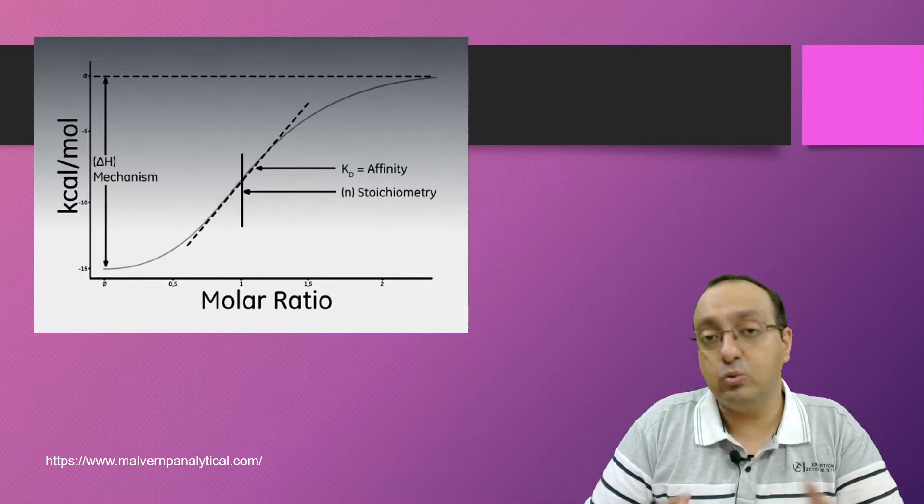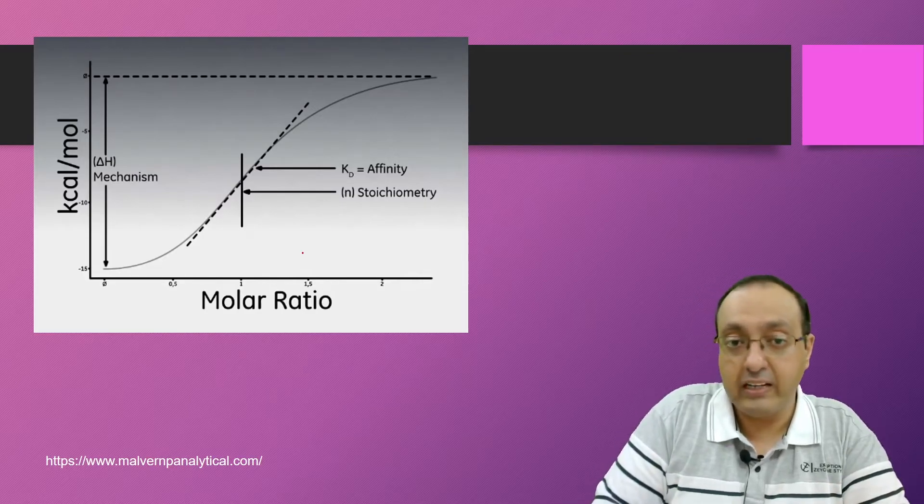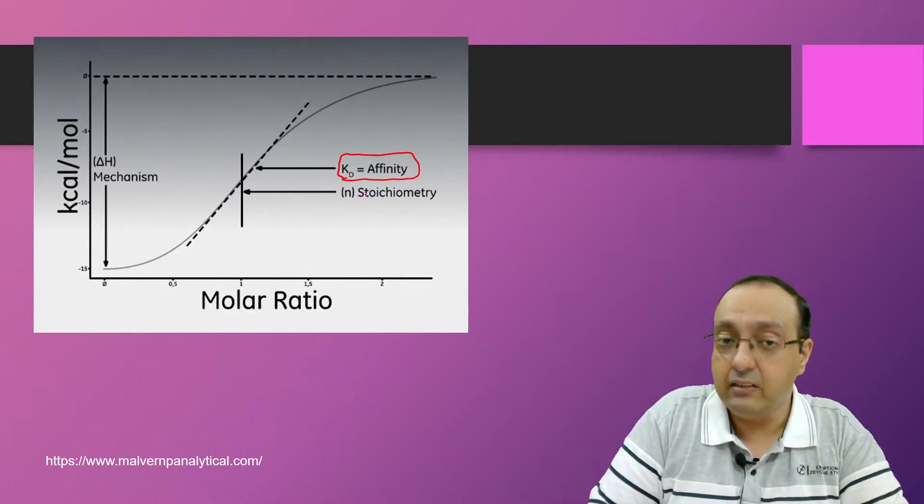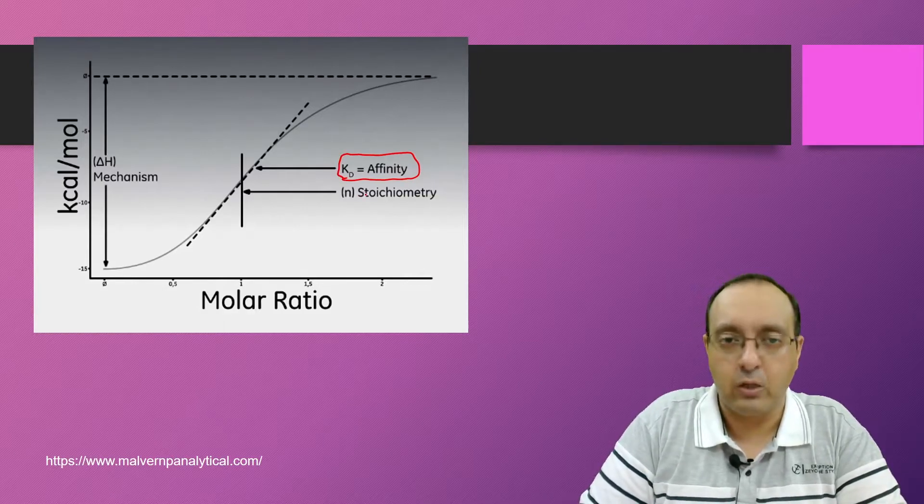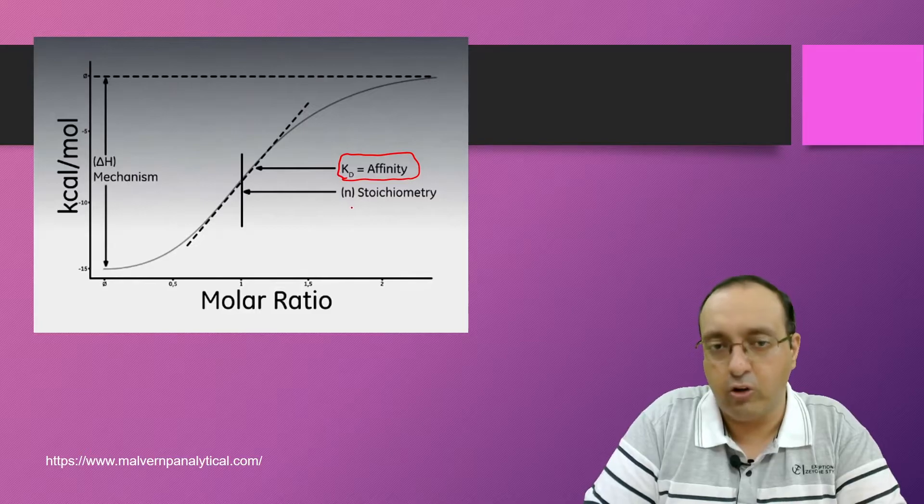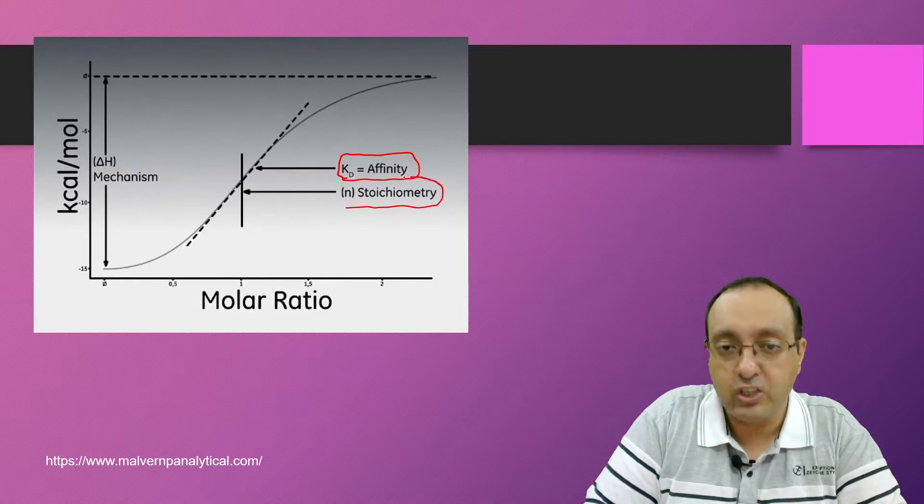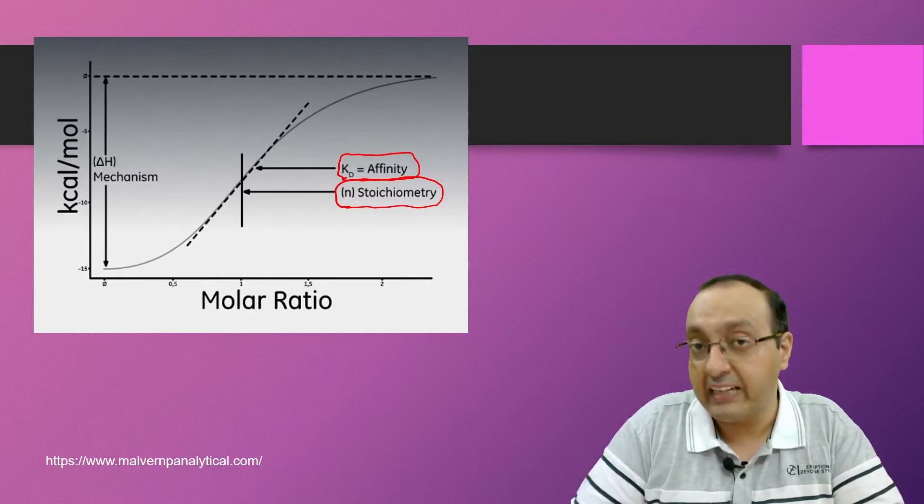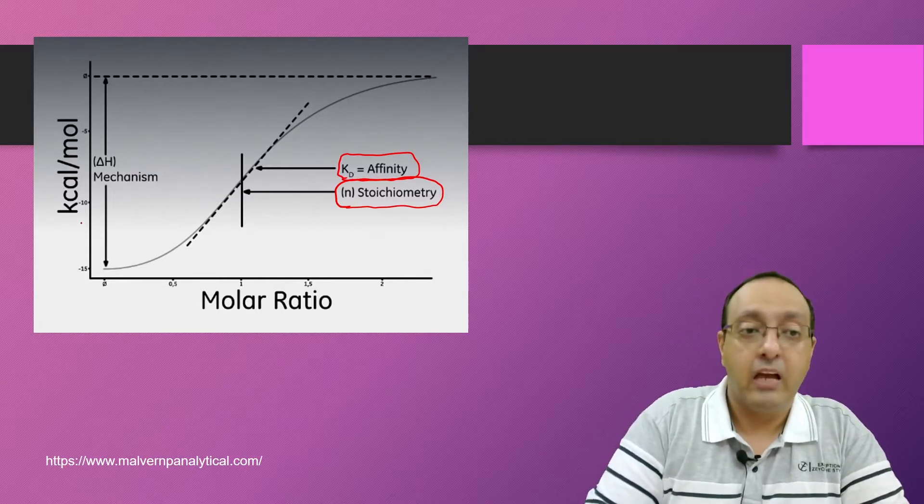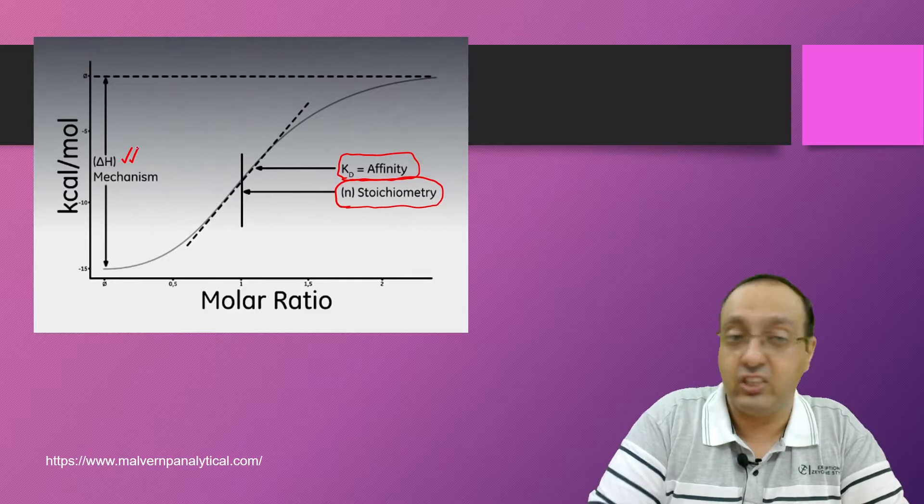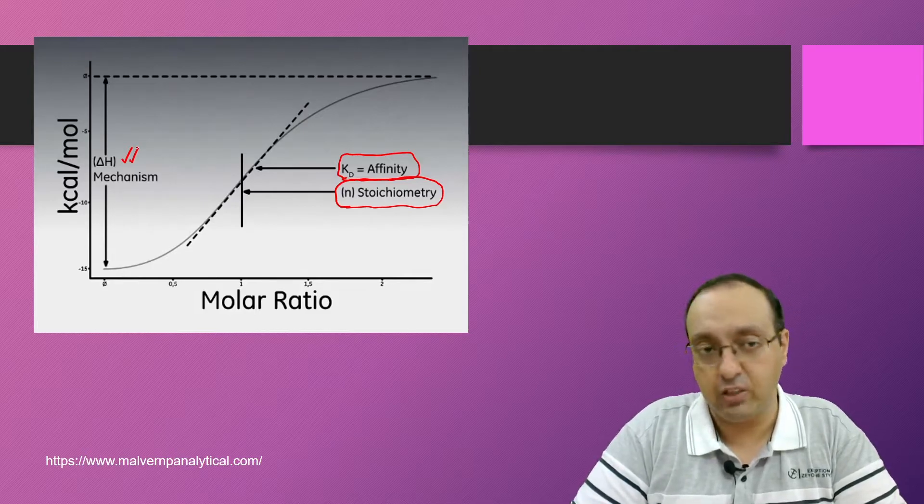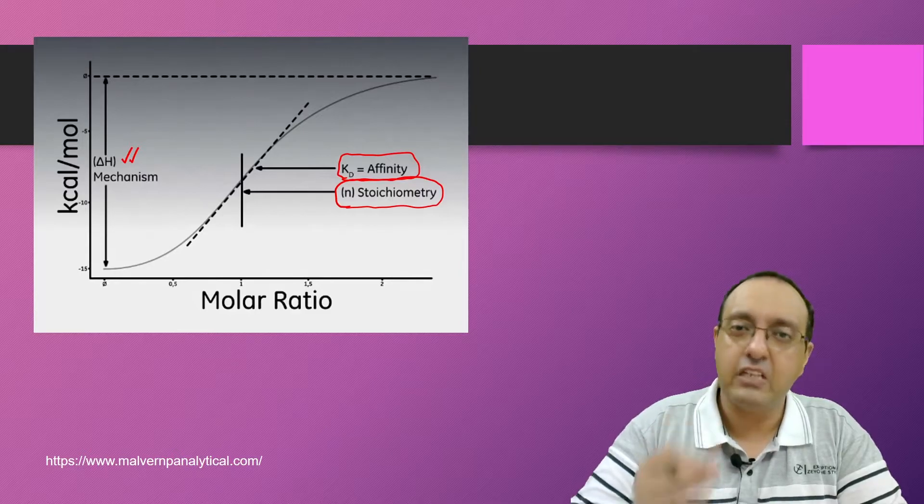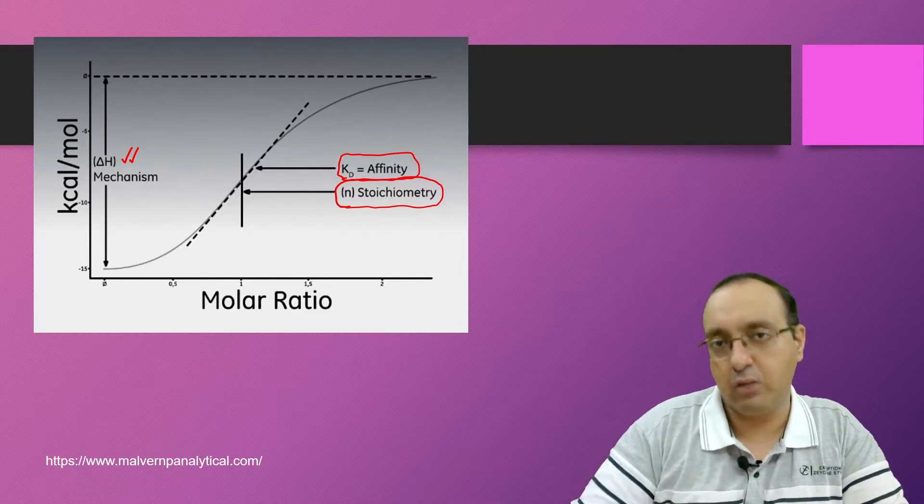This can be used to get three values. One is KD, which is the affinity of the protein for that ligand, usually in the nanomolar ranges. We also get the molar ratio and the stoichiometry—for example, how many ions or how many ligands are binding to the protein. And we are also getting the delta H, which is the enthalpy change of the reaction. This is an extremely sensitive technique. Very small changes are measured by this technique.